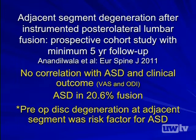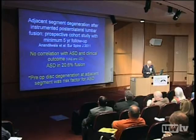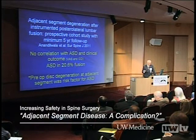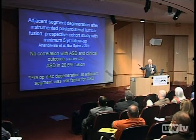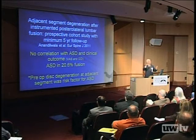What happens in the lumbar spine? The cervical spine literature shows no real difference. Looking at posterior lateral fusion, a European Spine study published this year again shows no correlation with adjacent segment degeneration in clinical outcomes. In this study, 20-21% adjacent segment degeneration is what we expect to see across the board - just in the natural process of aging.